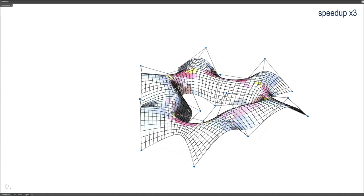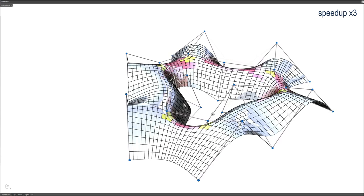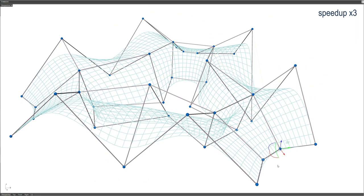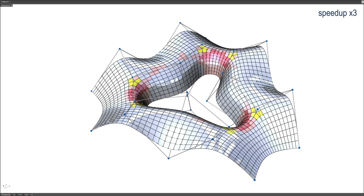Our method allows non-expert users to interactively edit a parametric surface that represents a target design, while providing real-time feedback on the deformed shape and maximum stress of cold bent glass panels approximating that surface.